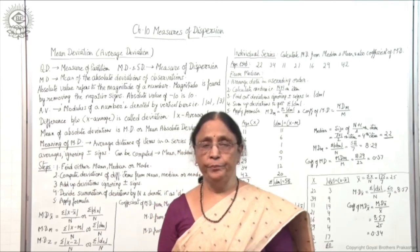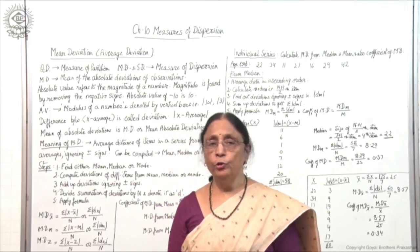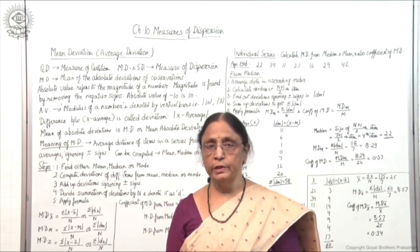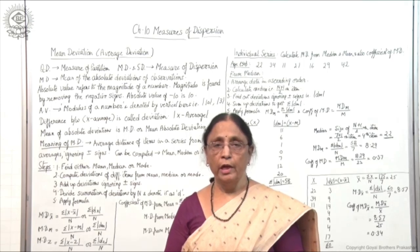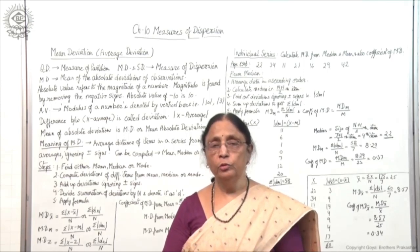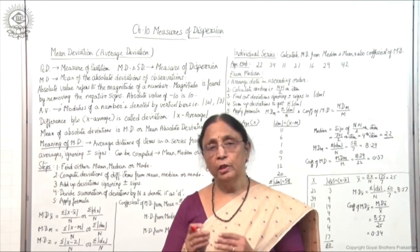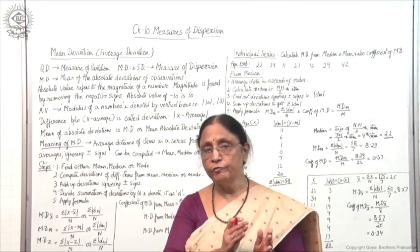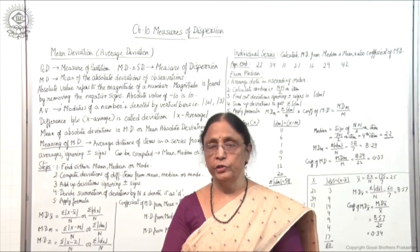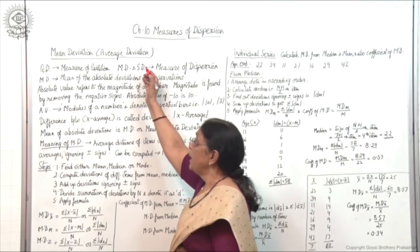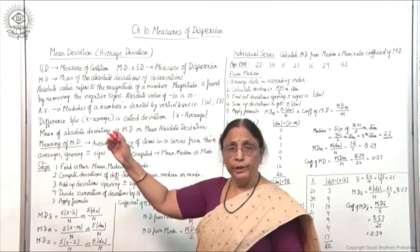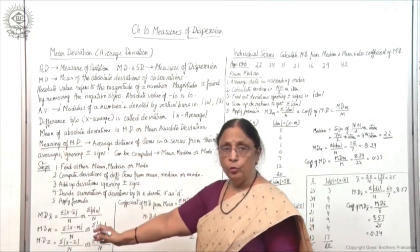What is mean deviation? Mean — you know — is the average of a series, and mean deviation is the deviation from the average: how much far a value is from the average. That is called mean deviation. This is also known as average deviation; the meaning will be clear when we go into detail.